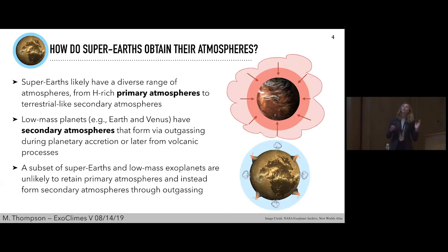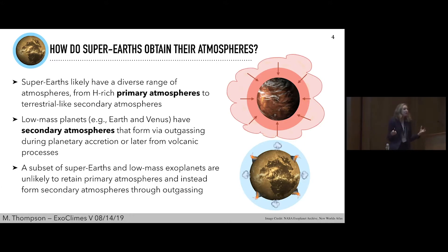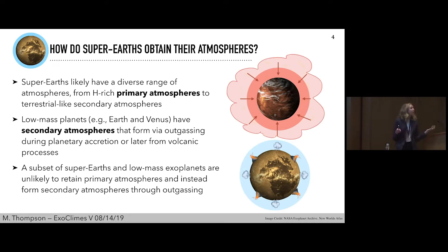So to start: how does a super-earth obtain its atmosphere? This is very much an unanswered question and very important within the field. It's likely that super-earths will have a wide diverse range of atmospheres — from hydrogen-rich primary atmospheres that accrete from the stellar nebula to potentially terrestrial-like secondary atmospheres that instead form via outgassing.